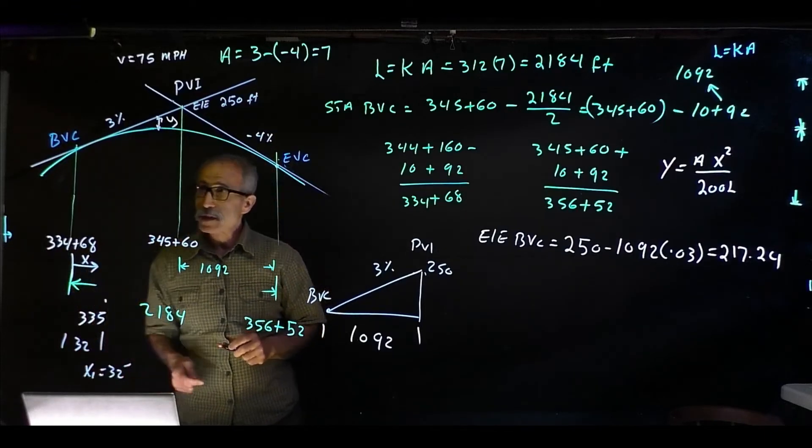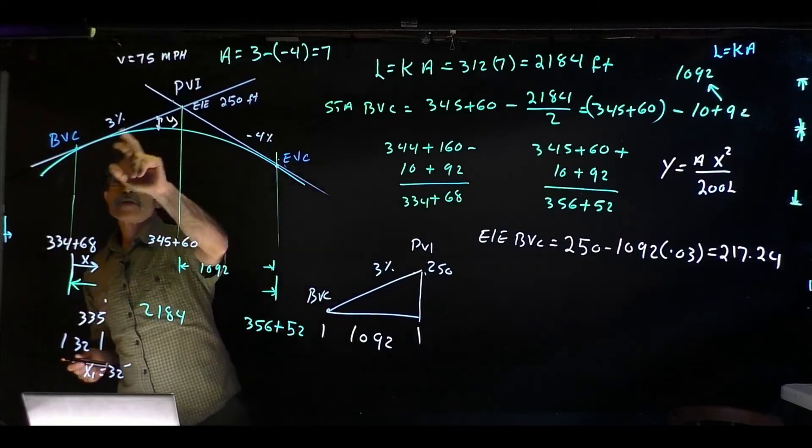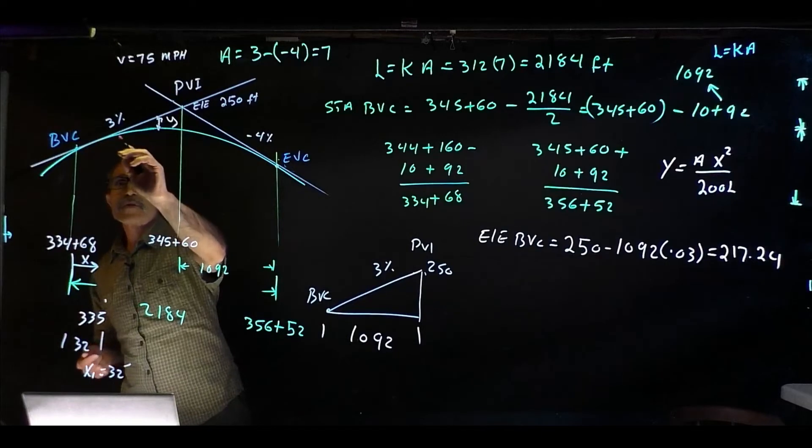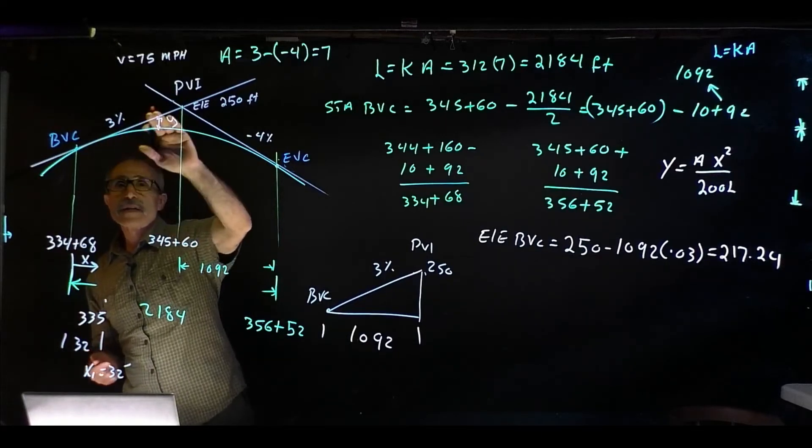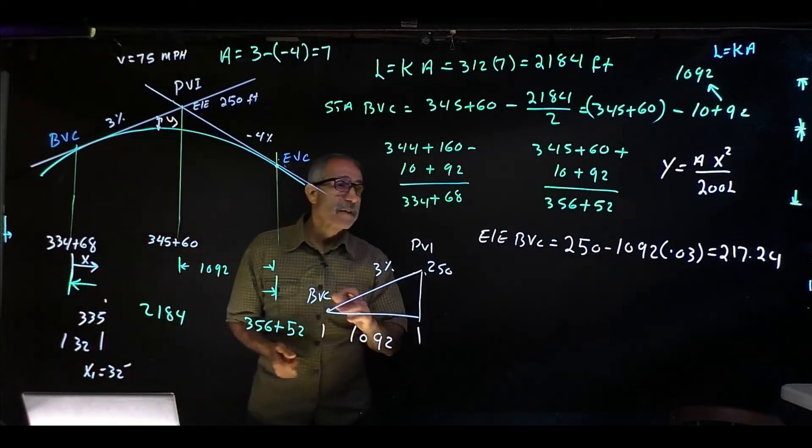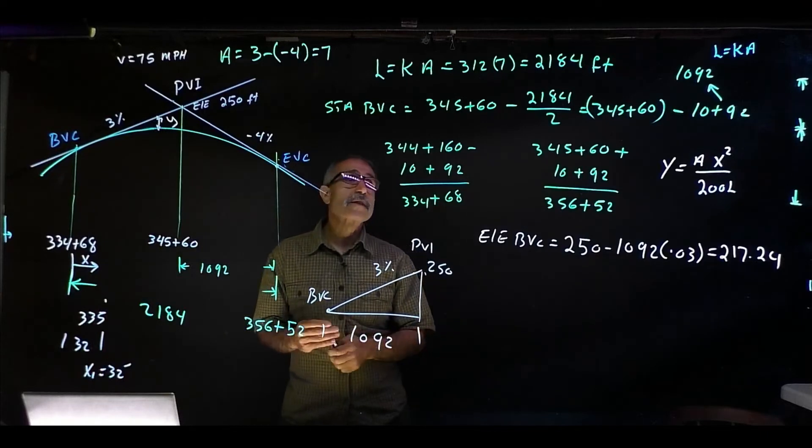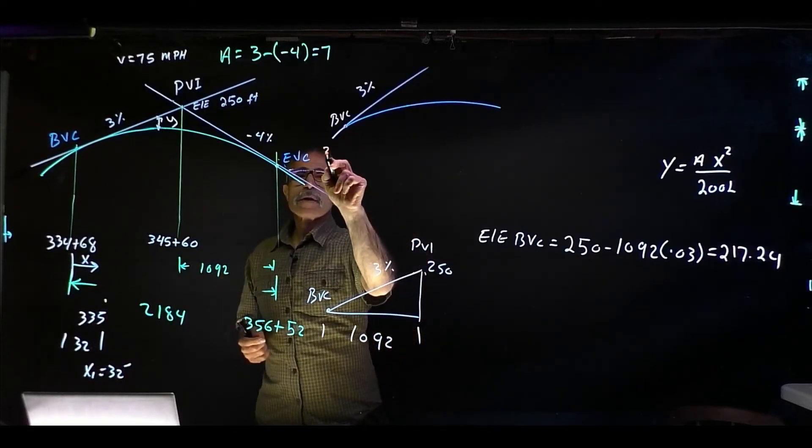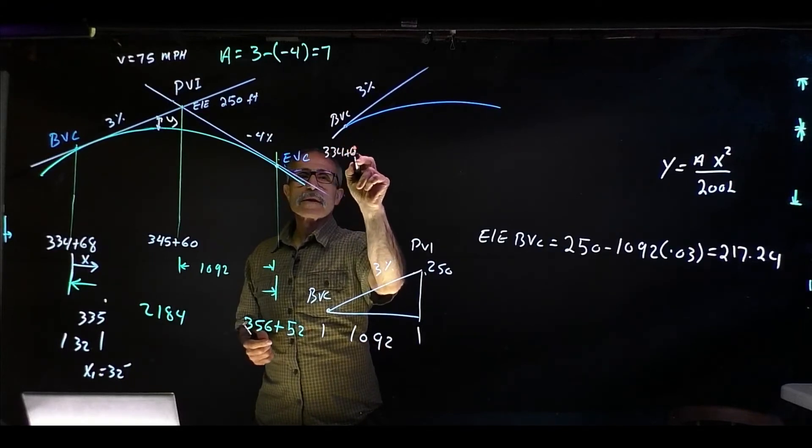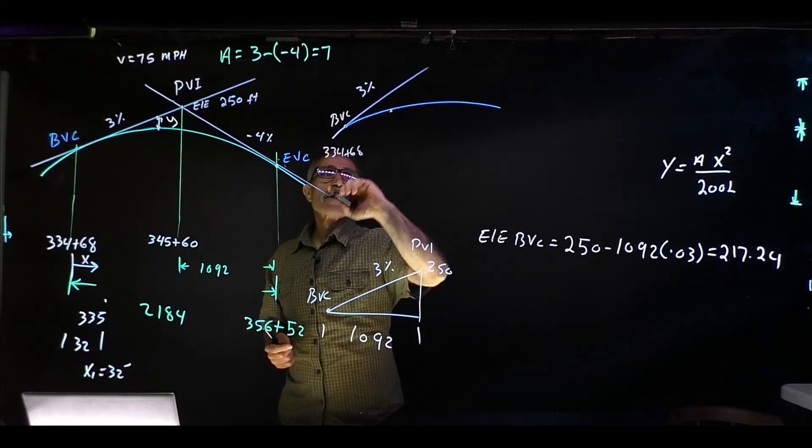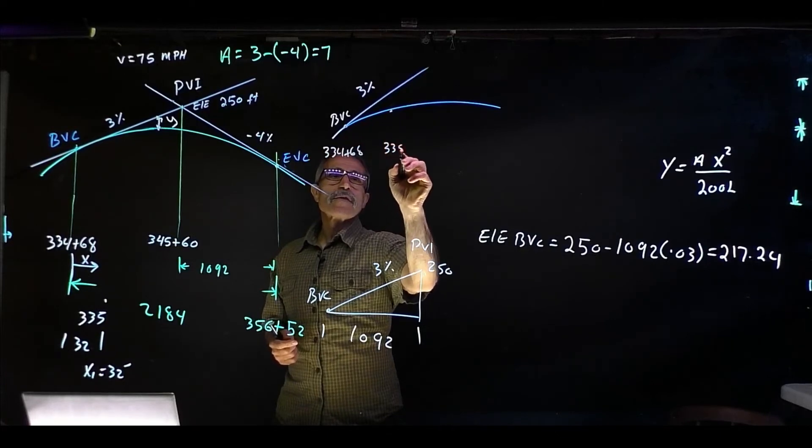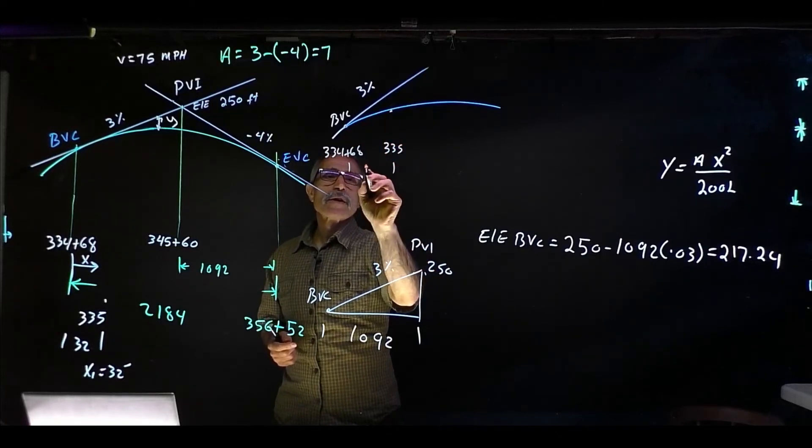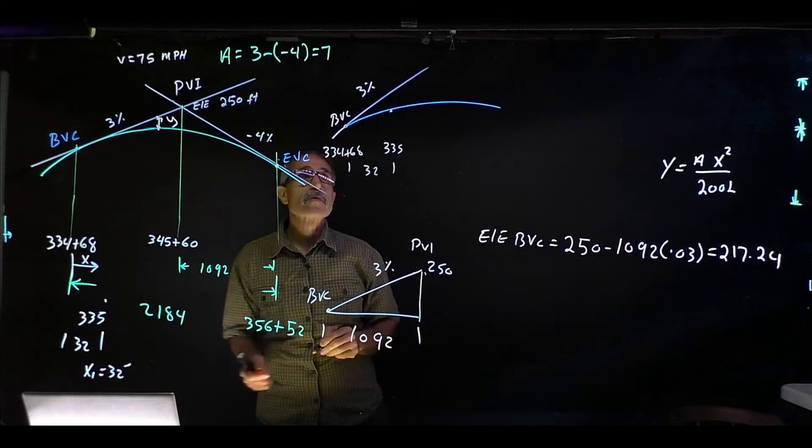I want to know what the elevation is on tangent. My BVC is at 334+68, assuming this is the station right there at 335, and that distance came out to be 32 feet, which we said is x1.